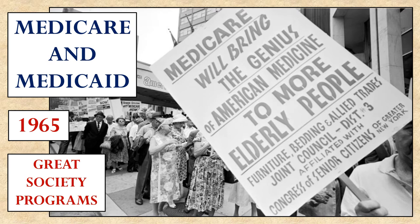Another area the Great Society addressed was healthcare. Twin programs called Medicare and Medicaid were established in 1965 to make sure that people could get at least minimal levels of healthcare even if they couldn't afford it. Medicare provided medical care for the elderly; Medicaid did so for poor people. Together, the idea was that in America, everybody would be able to receive healthcare even if they couldn't afford to purchase it for themselves.